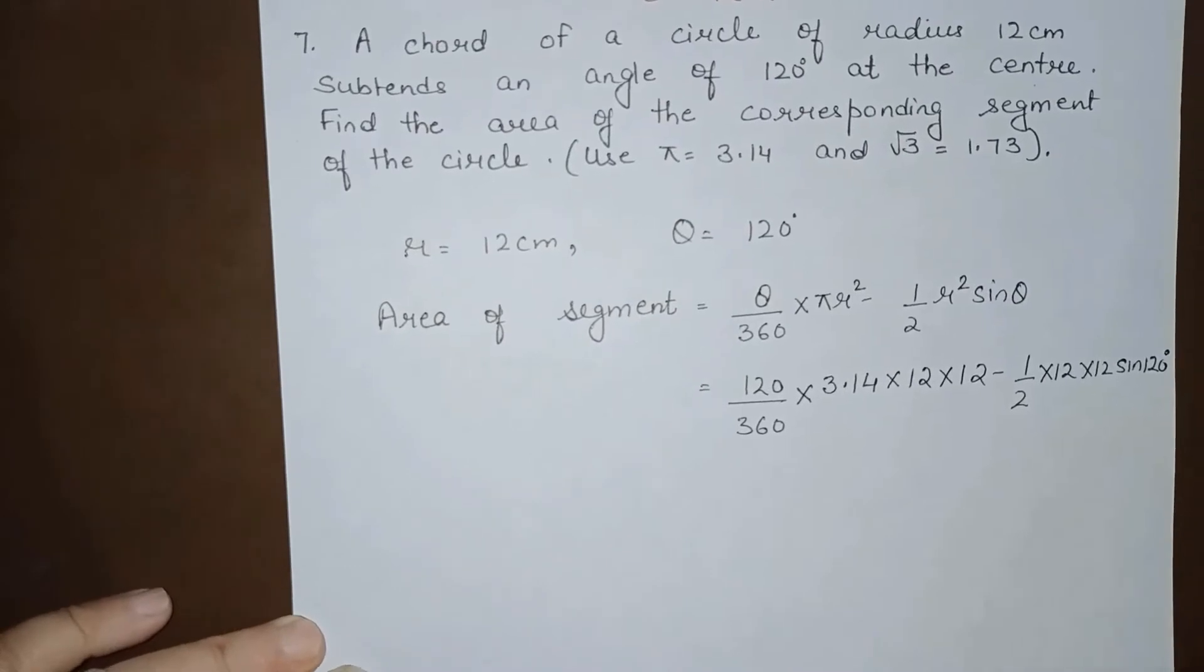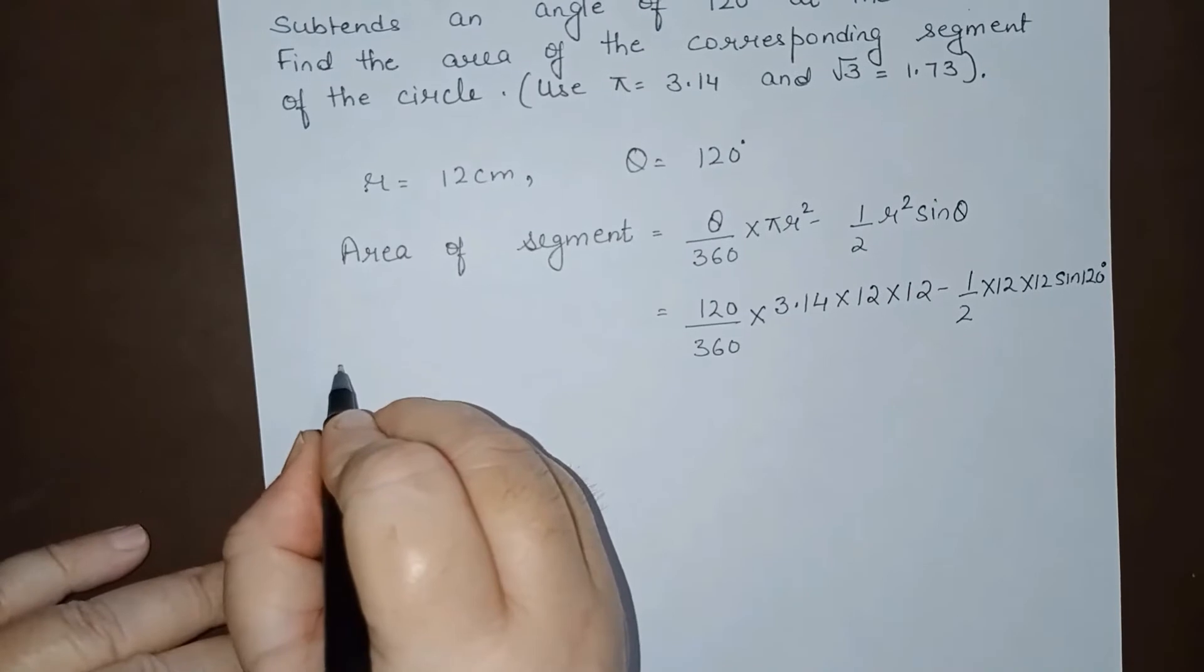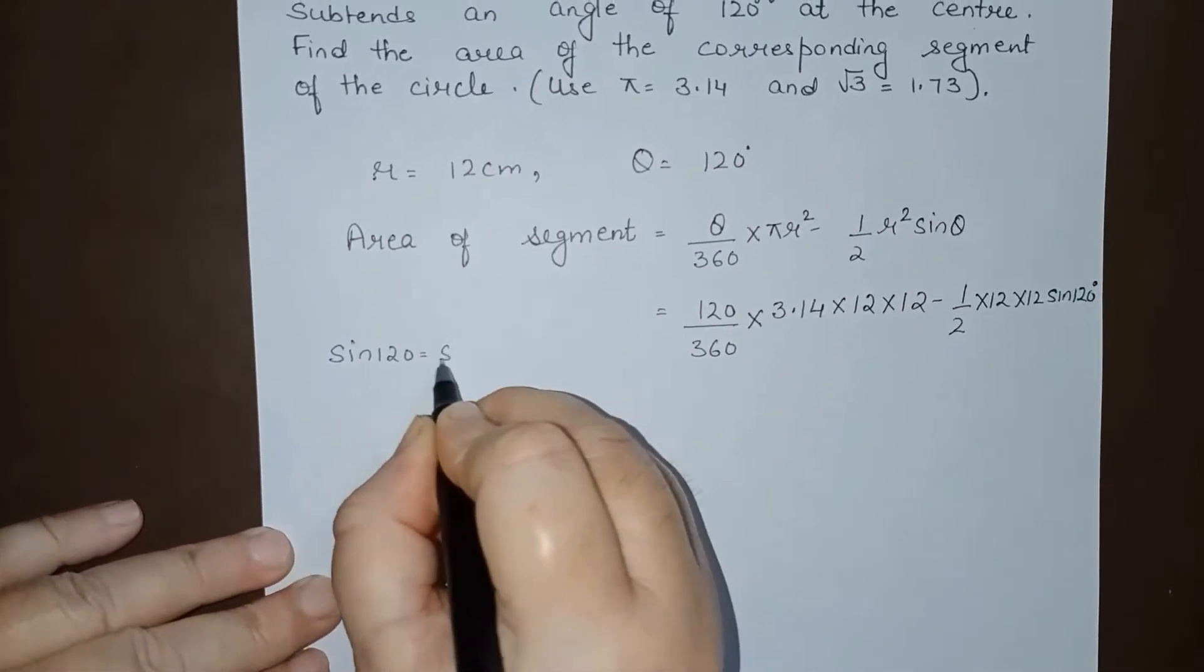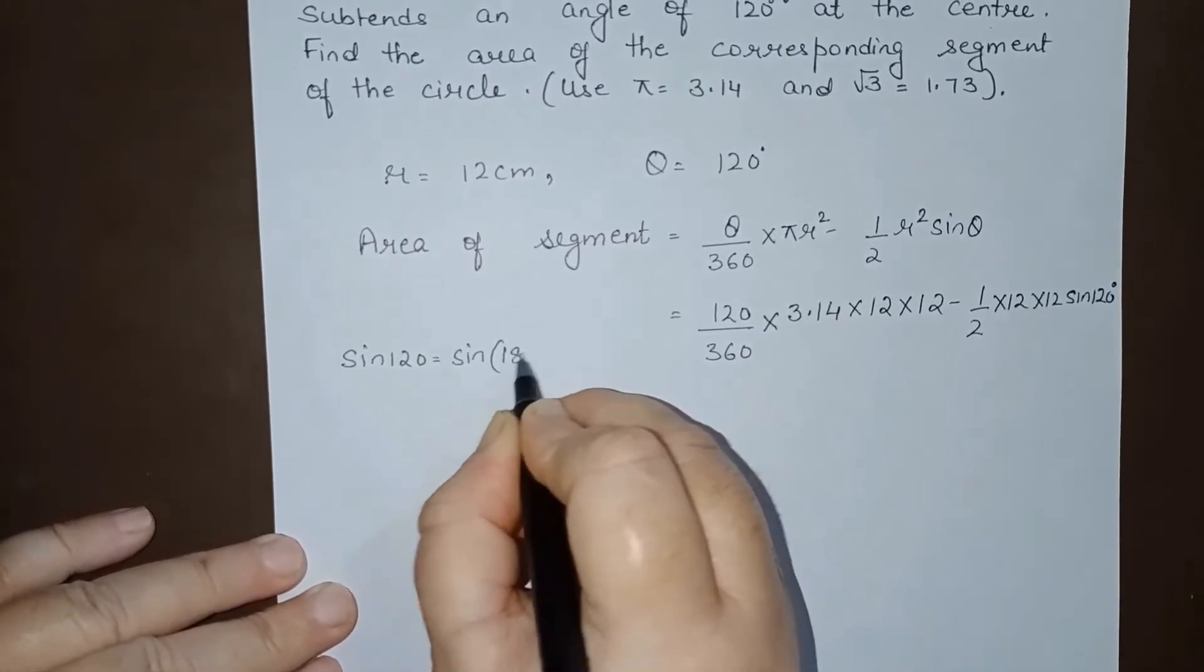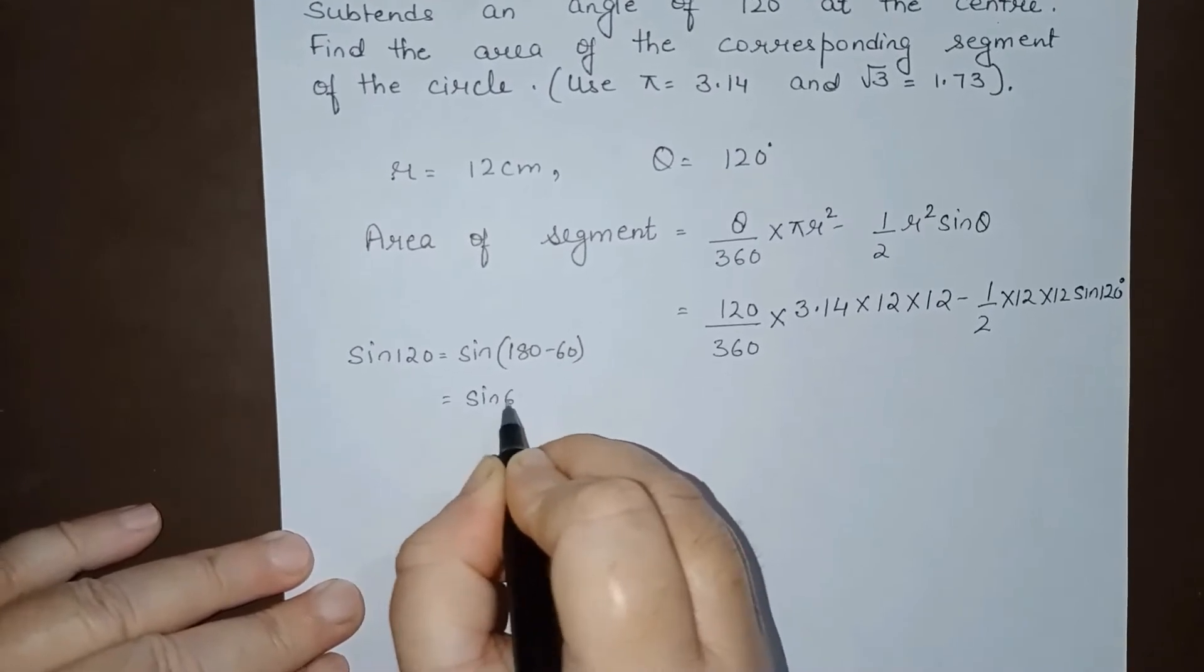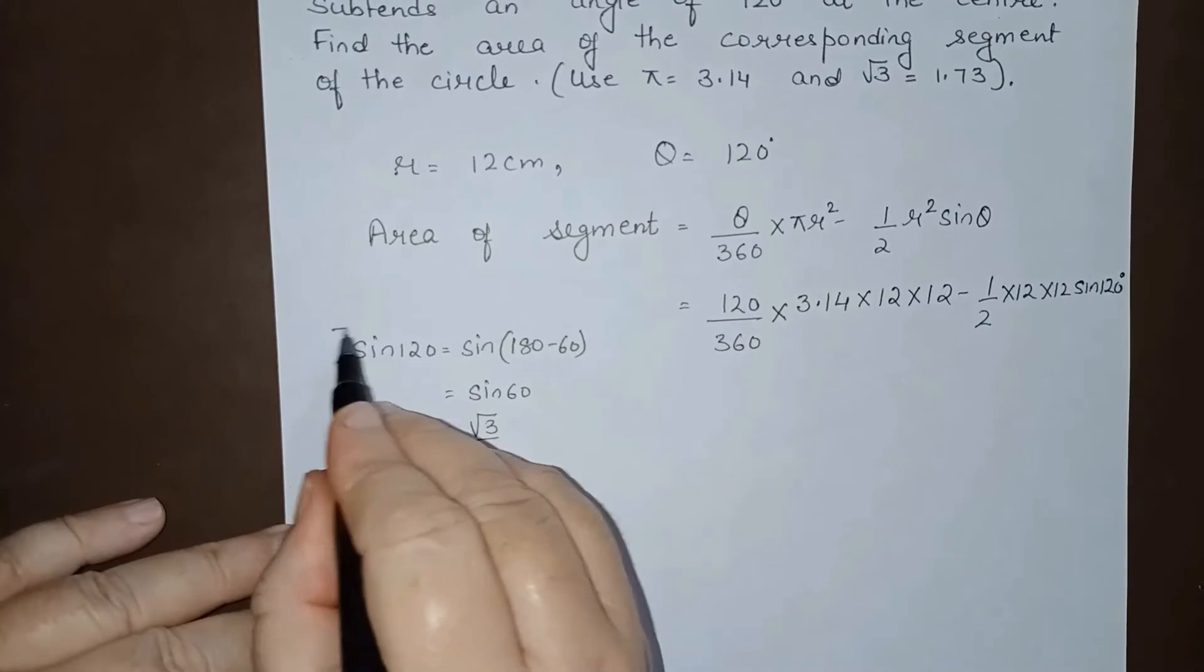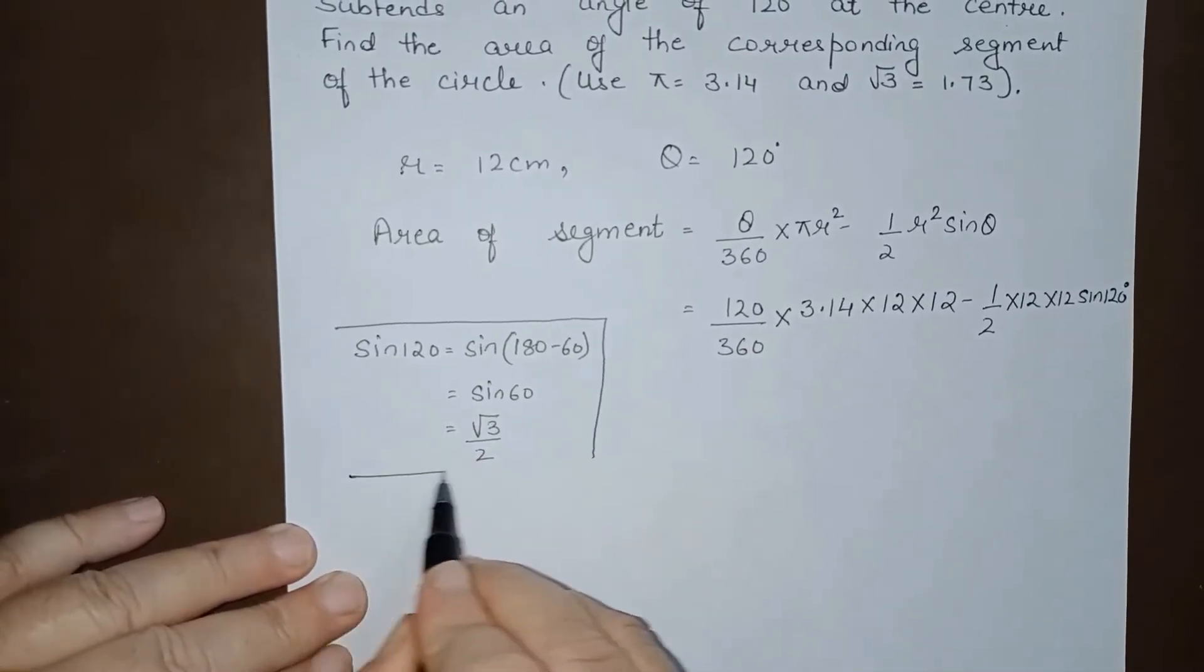Let me first explain sin(120°). Sin(120°) = sin(180° - 60°) = sin(60°). Therefore its value is √3/2. Remember, sin(120°) is the same as sin(60°).